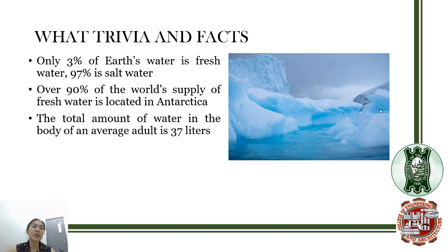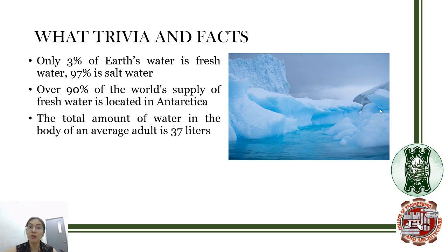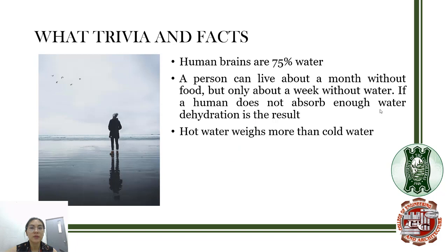Another fact is that 90% of the world's supply of fresh water is located in Antarctica. The total amount of water in a human body is about 37 liters, so you are mostly made up of water. The human brain is 75% water, and a person can live about a month without food but only about a week without water. If a human does not absorb enough water, dehydration occurs.